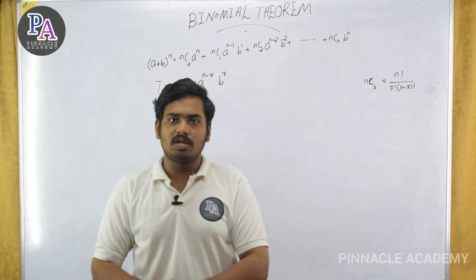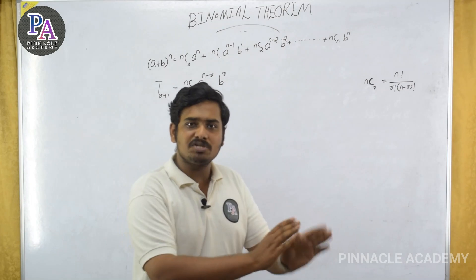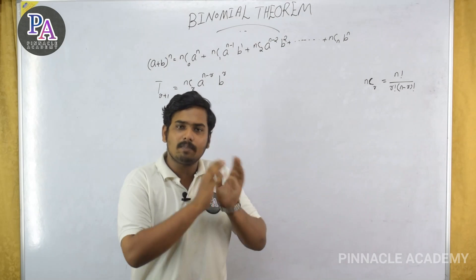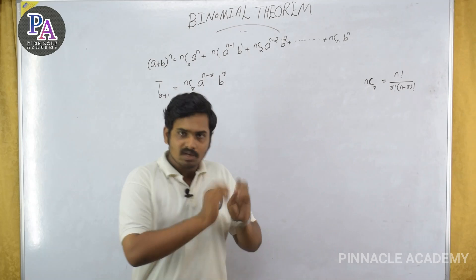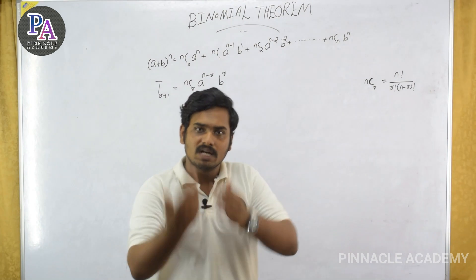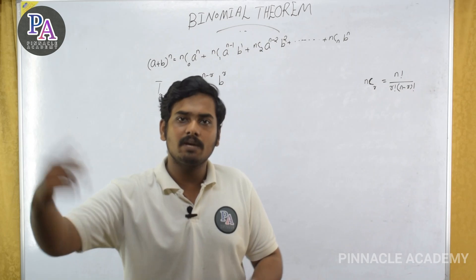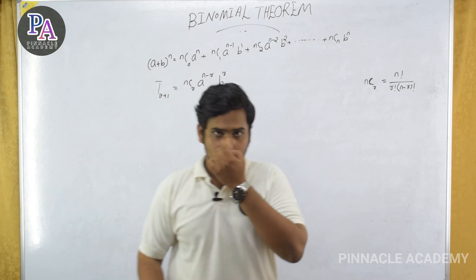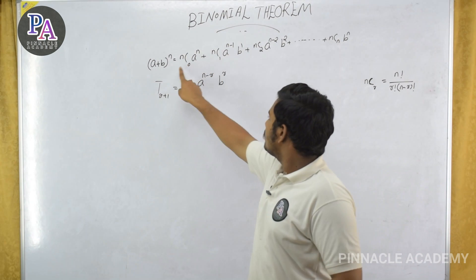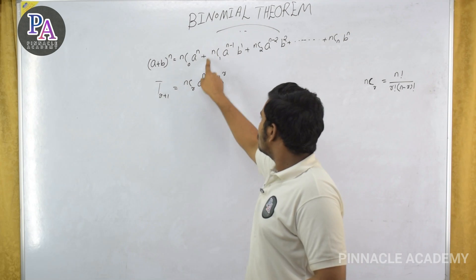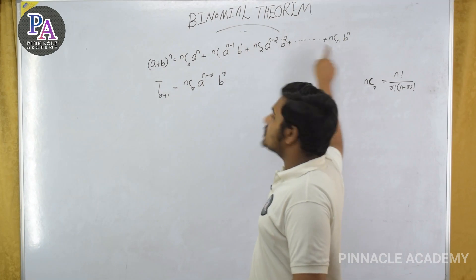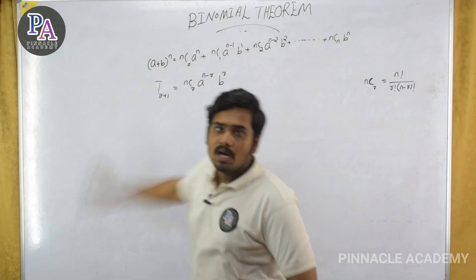The alternative sign pattern: first term positive one, second negative one, third positive, fourth negative, etc. As you see: first positive one, second negative one, third positive, fourth negative, and so on.